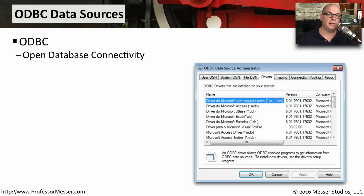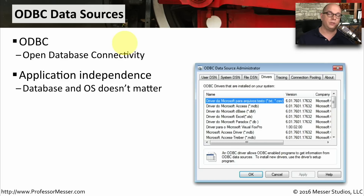One challenge for application developers is that different people may want to store information into different kinds of databases. So instead of writing all of their code for a specific kind of database, the developer can write their code to use an ODBC driver. ODBC stands for Open Database Connectivity, and you can find all of the Windows configurations for ODBC under the ODBC Data Sources. This allows the application developer to create an application that really doesn't care what the backend database is — ODBC is the middleware between the application and the database. This is very similar to printing: the application has no idea what the printer is; instead it prints to a print driver, and the print driver prints to the printer. Same idea here — the application developer uses the ODBC driver, and the ODBC driver then uses the database.